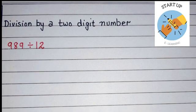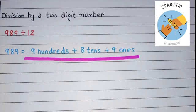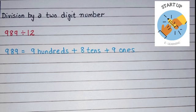First of all, we will expand this number into 9 hundreds plus 8 tens plus 9 ones. It means 900 will be divided by 12, then 8 tens will be divided by 12, and at the end, 9 ones will be divided by 12.